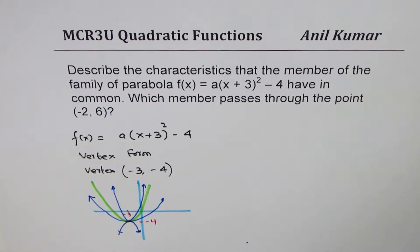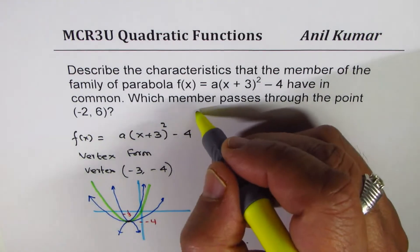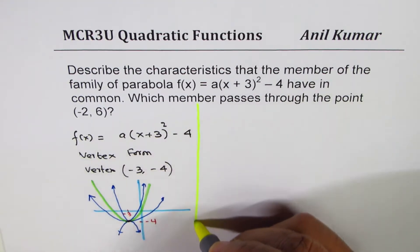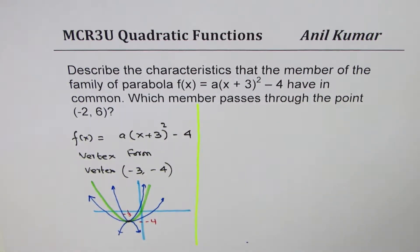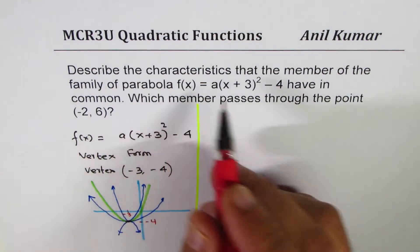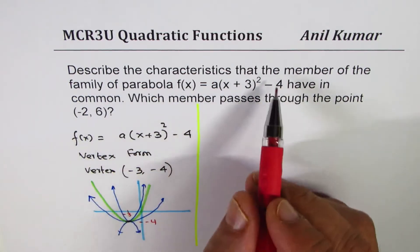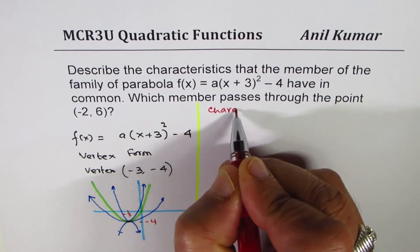So the common characteristics which you can list, there are two common characteristics. So let's describe the characteristics of the family. Let's write them down.